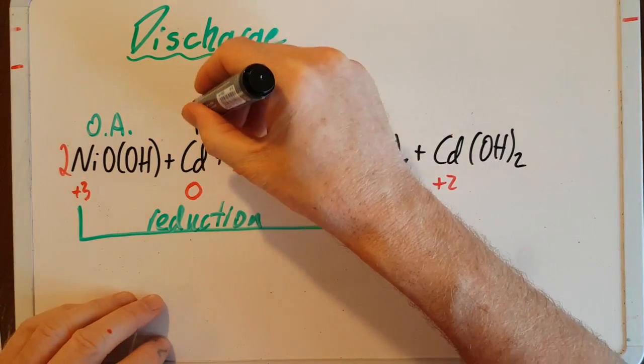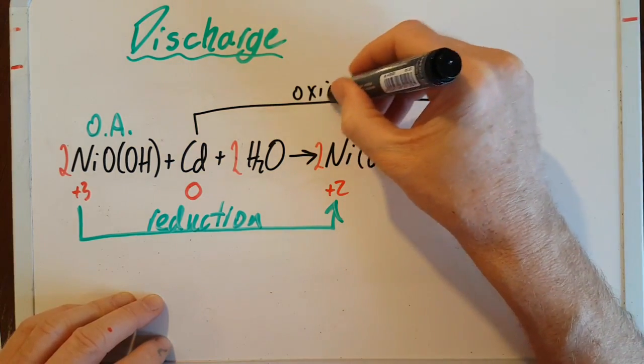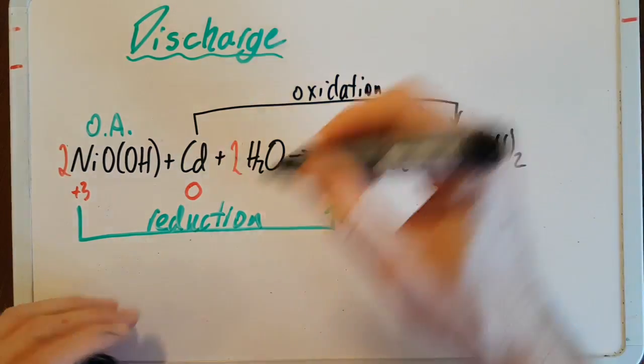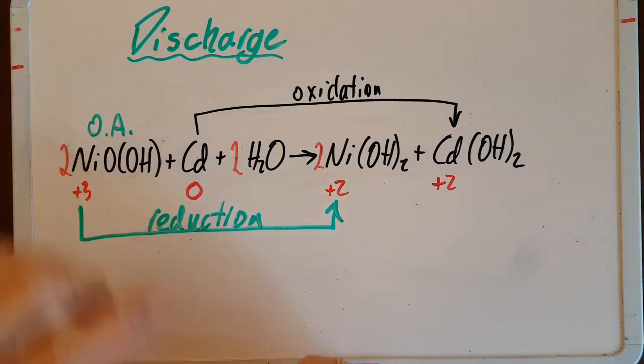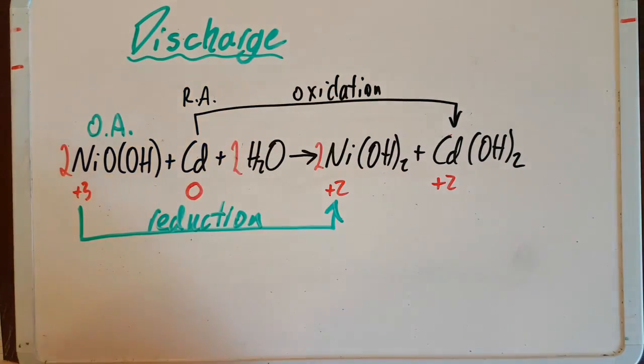Onto cadmium. That goes from zero to plus two. So that is oxidation. Which means that this cadmium must be the reducing agent. Cadmium is the reducing agent.